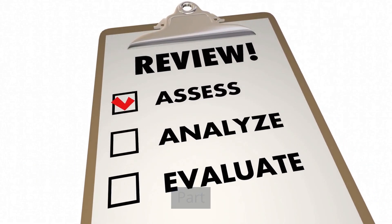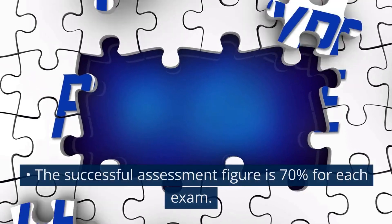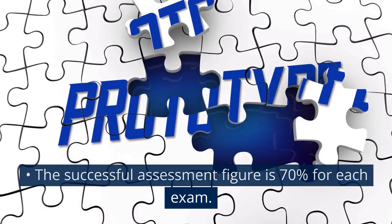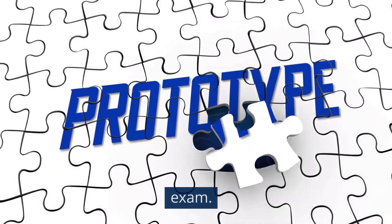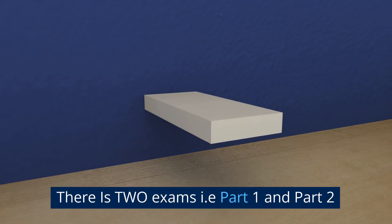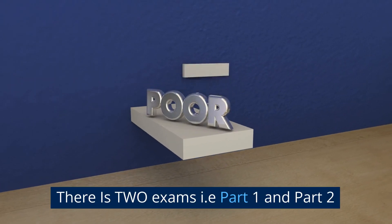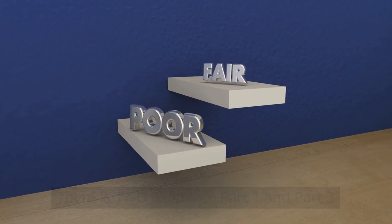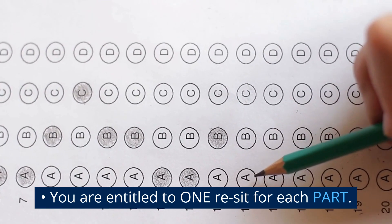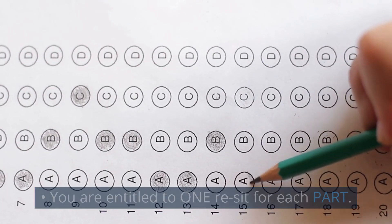The assessment process: written assessments will be multi-choice written assessments on each course part. The successful assessment figure is 70% for each exam. There are two exams — Part 1 and Part 2. You are entitled to one resit for each part. You must be successful in both parts to pass the course.